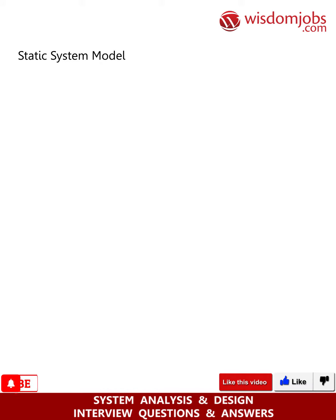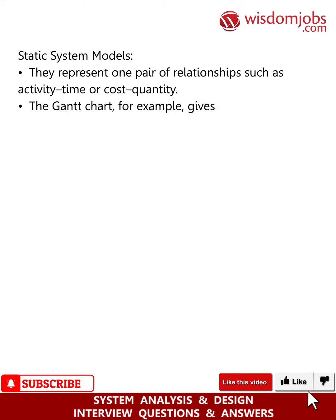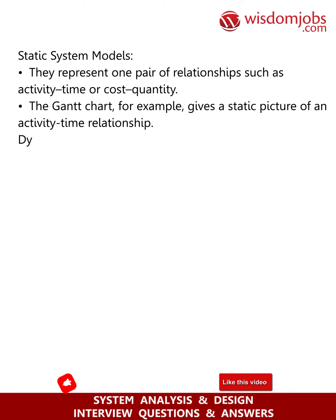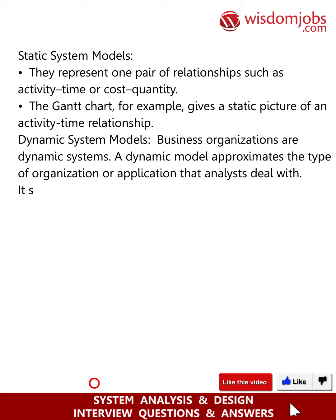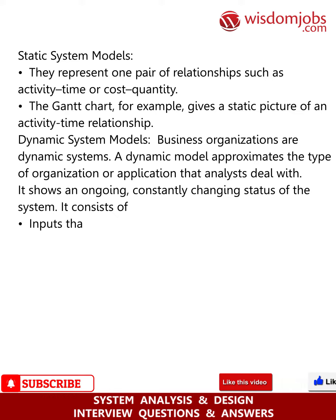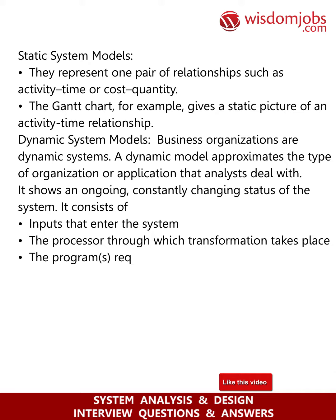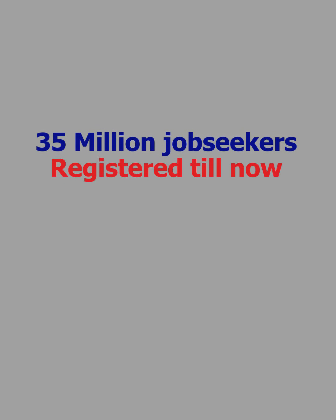Static system models: they represent one pair of relationships such as activity-time or cost-quantity. The Gantt chart gives a static picture of an activity-time relationship. Dynamic system models: business organizations are dynamic systems. A dynamic model approximates the type of organization or application that analysts deal with. It shows an ongoing, constantly changing status of the system. It consists of inputs that enter the system, the processor through which transformation takes place, the programs required for processing, and the outputs that result from processing.